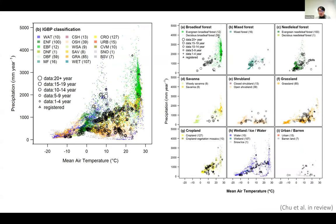If we narrow down to site-specific IGBP ecosystem type — plant functional type — and look at how well we represent different plant functional types within the network, for most ecosystem types you can see there are a decent number of towers available, measuring across the temperature and precipitation gradient. There are some areas for improvement, but we have much better coverage right now than 10 or 20 years ago.